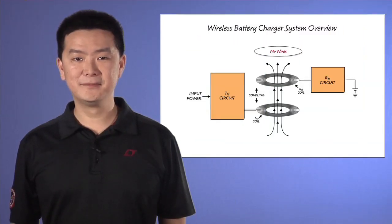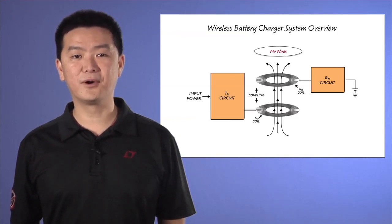A wireless battery charger system is comprised of two parts separated by an air gap: a transmit circuit with a transmit coil and a receive circuit with a receive coil.